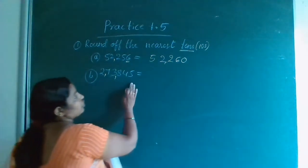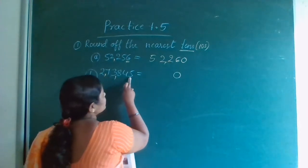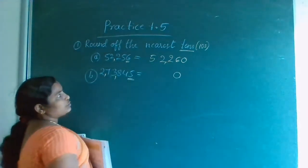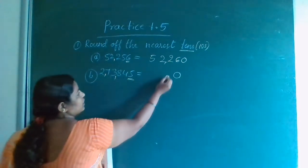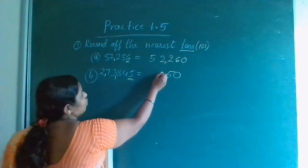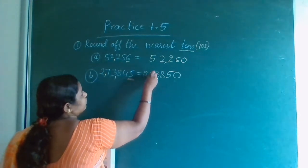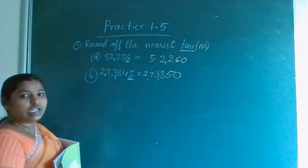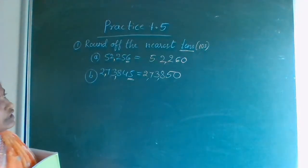Same thing for the second problem. Write 0 for the 1's place. Look at 1's place — this is 5, so next number increase by 1. Remaining all numbers should be the same. This is rounding off to nearest tens.